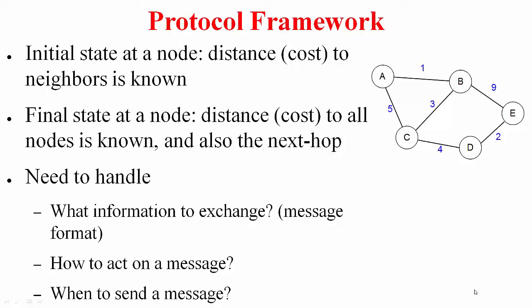To begin with, a given node knows the distance or cost just to its neighbors — that's the state at which each node begins. As the algorithm iterates, a node gets to know the distance to all the nodes in the topology. Not only this, it also learns which next hop to take to reach a given destination.